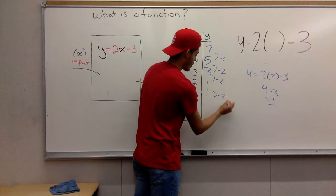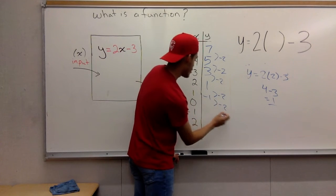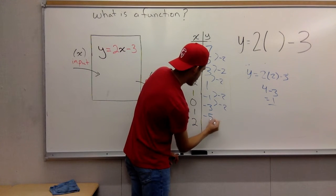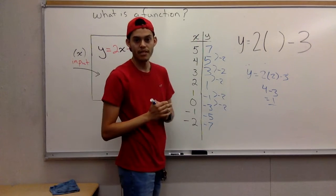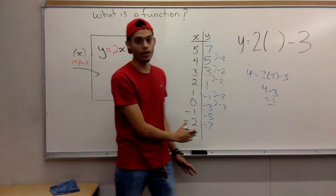1 minus 2, you get negative 1. Negative 1 minus 2, you get negative 3. Then you get negative 5, negative 7. Simple as that. You see the pattern, you follow the pattern if the numbers are in order.